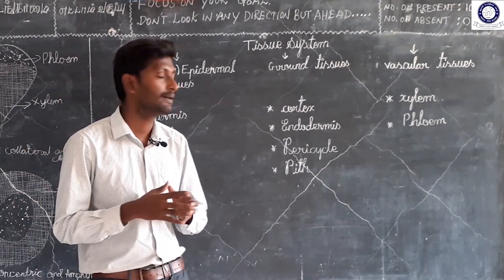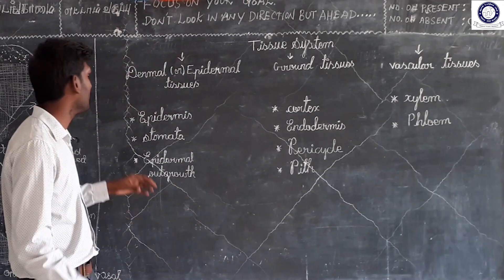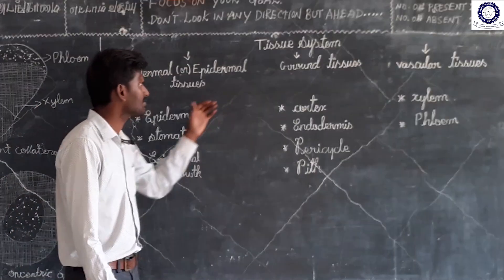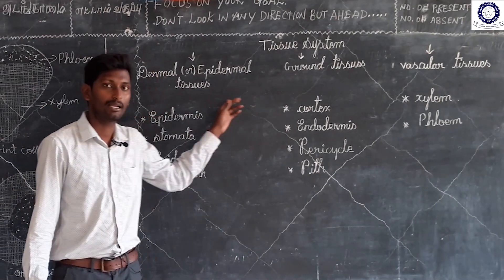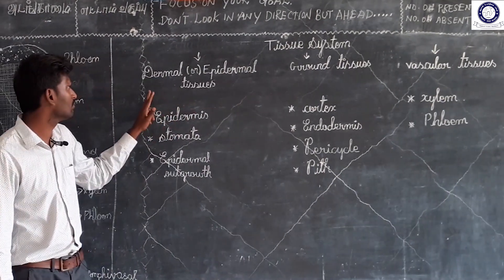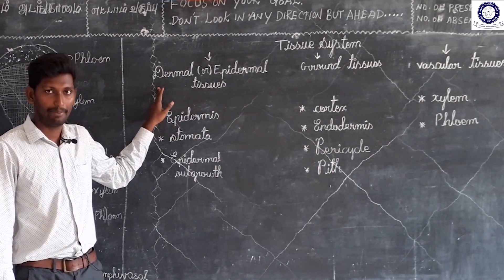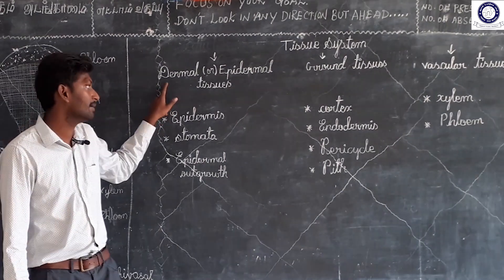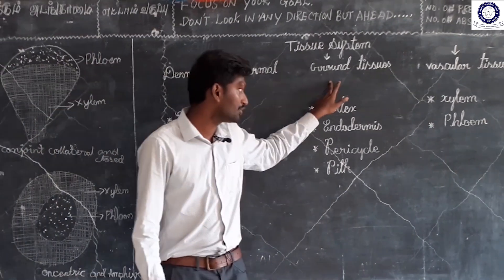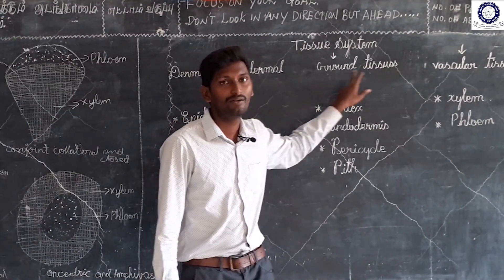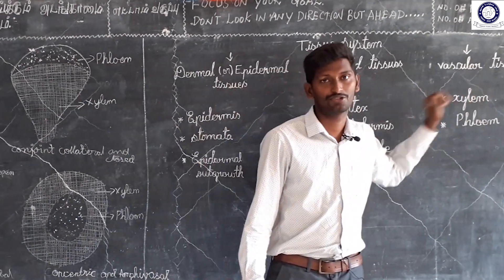When we look at the plant, there are three tissue systems: 1. Dermal or Epidermal Tissue System, 2. Ground Tissue System, 3. Vascular Tissue System.